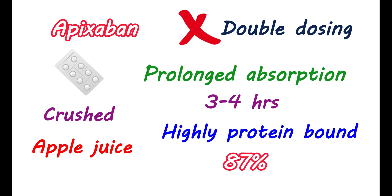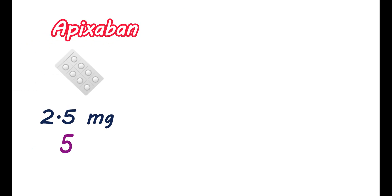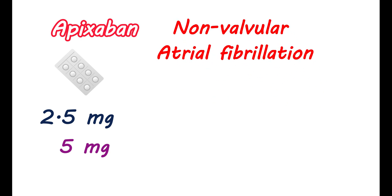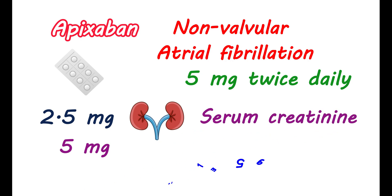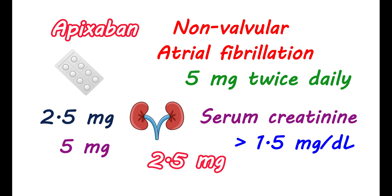Apixaban is available as a tablet at 2 strengths: 2.5 mg and 5 mg. To prevent stroke and systemic embolism in non-valvular atrial fibrillation, this medication is given at a dose of 5 mg twice daily. In people with renal impairment, the dose may be reduced. When the serum creatinine levels are above 1.5 mg per deciliter, the dose may be reduced to 2.5 mg.